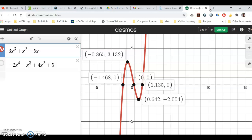So here's my polynomial over here. And the solutions to this, when it would make it be zero, would be X of negative 1.5, about X of zero, and then X of about 1.14 or something like that.